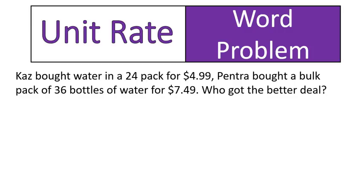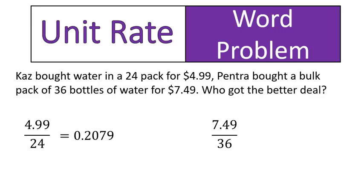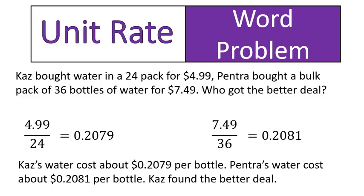Welcome back — I hope you solved it. This is the way you do it. You take Kaz's bottles of water: cost divided by the number of bottles — $4.99 divided by 24 — gives you approximately 0.2079. Now take Pentra's water bottles: cost divided by the number of bottles gives 0.2081. These costs are actually very similar. However, because Kaz's water cost 0.2079 as opposed to Pentra's 0.2081, Kaz actually got a slightly better deal on his water bottles — and he didn't have to carry nearly as many water bottles out to the archery tournament or whatever they're doing.